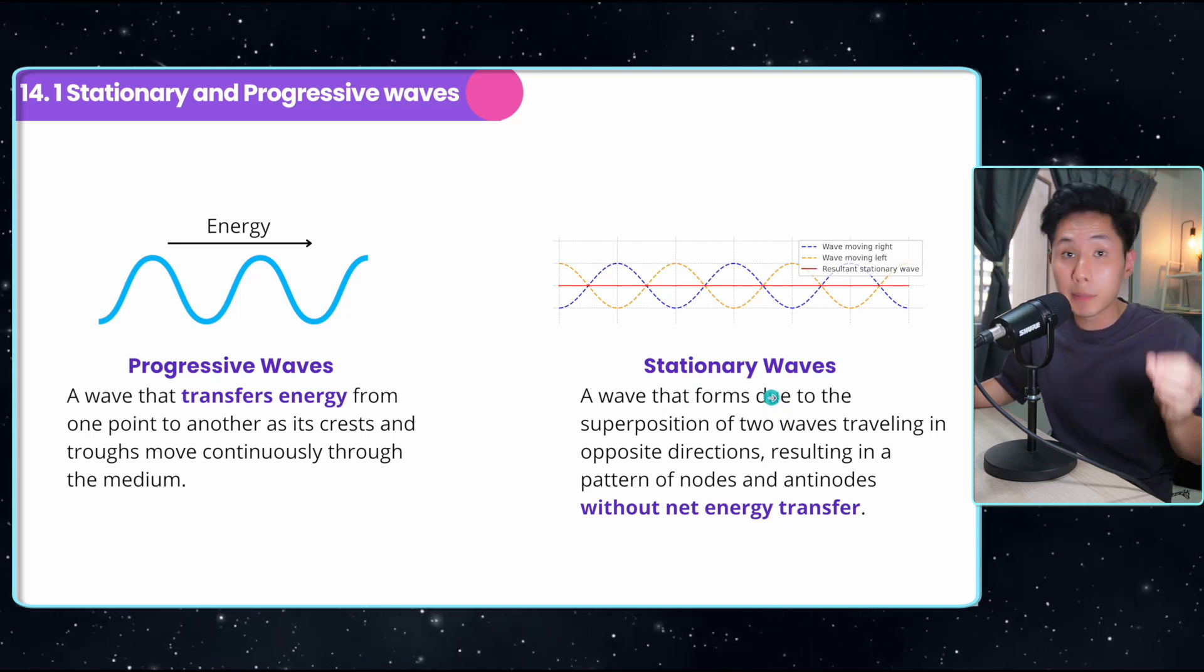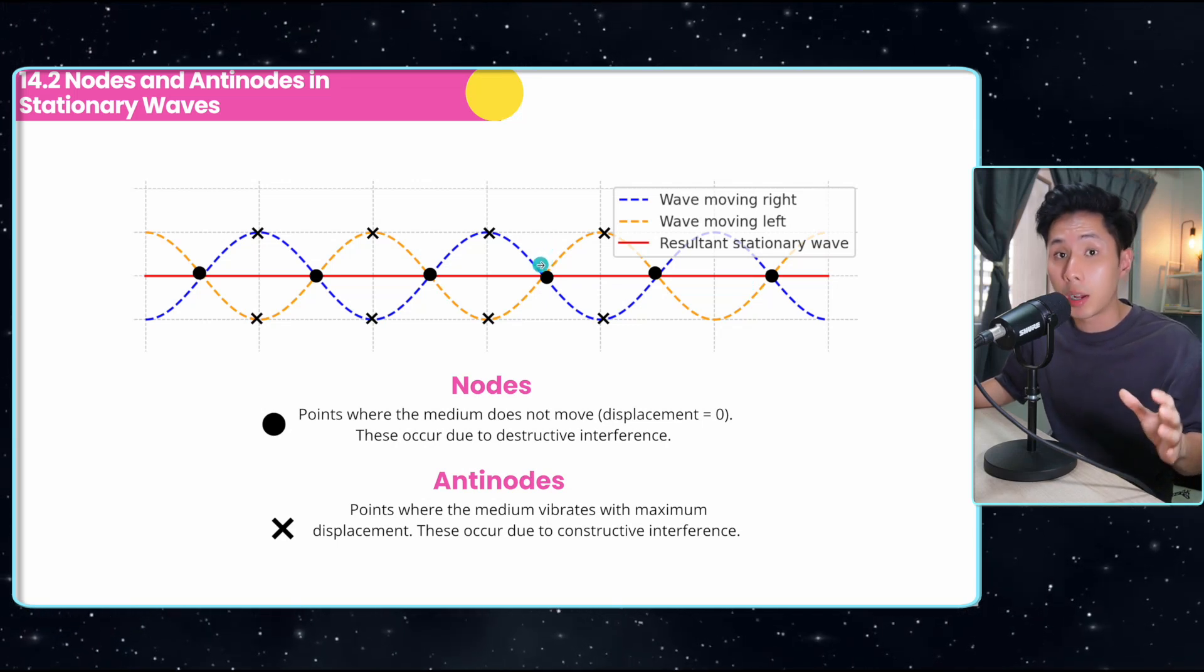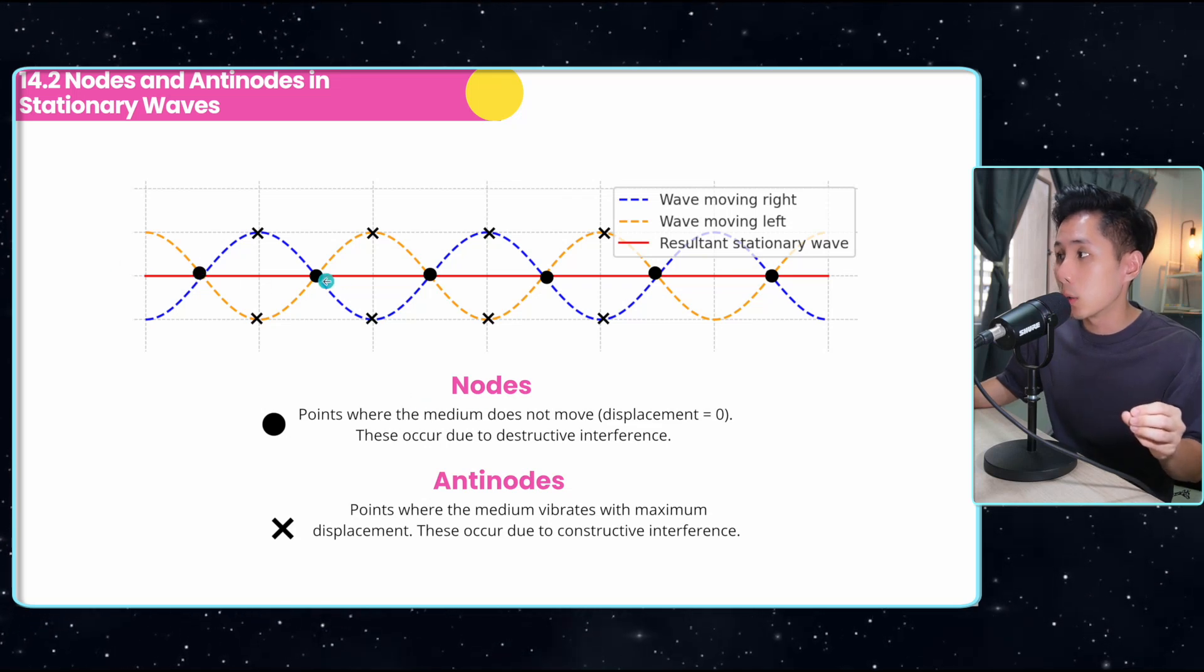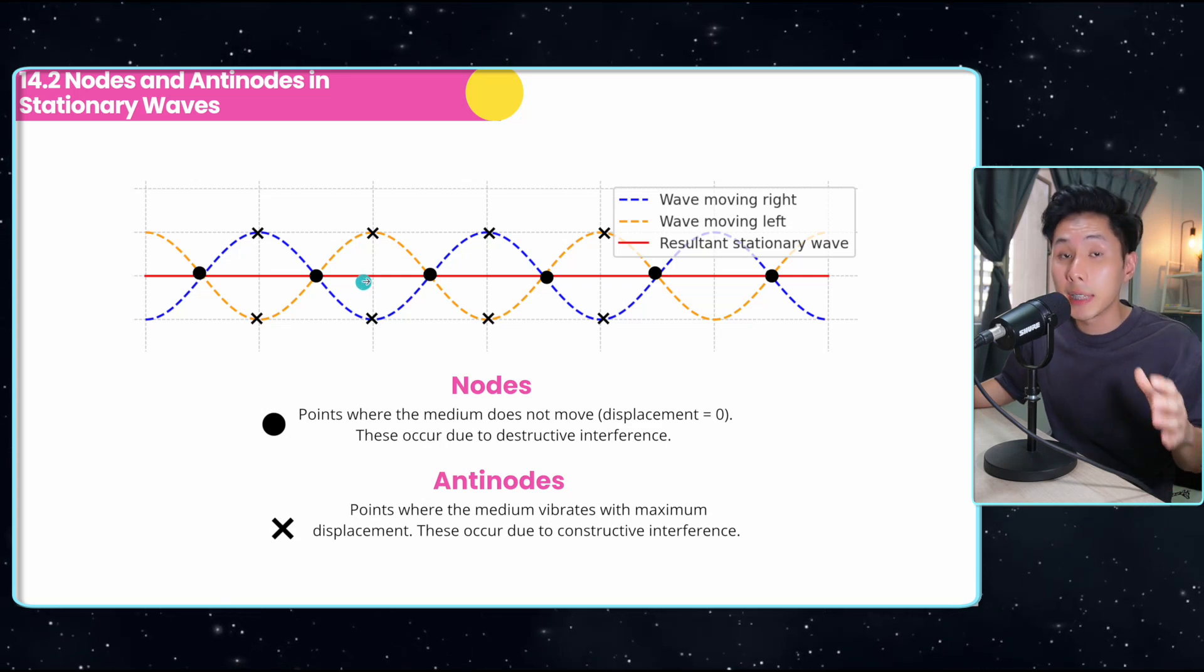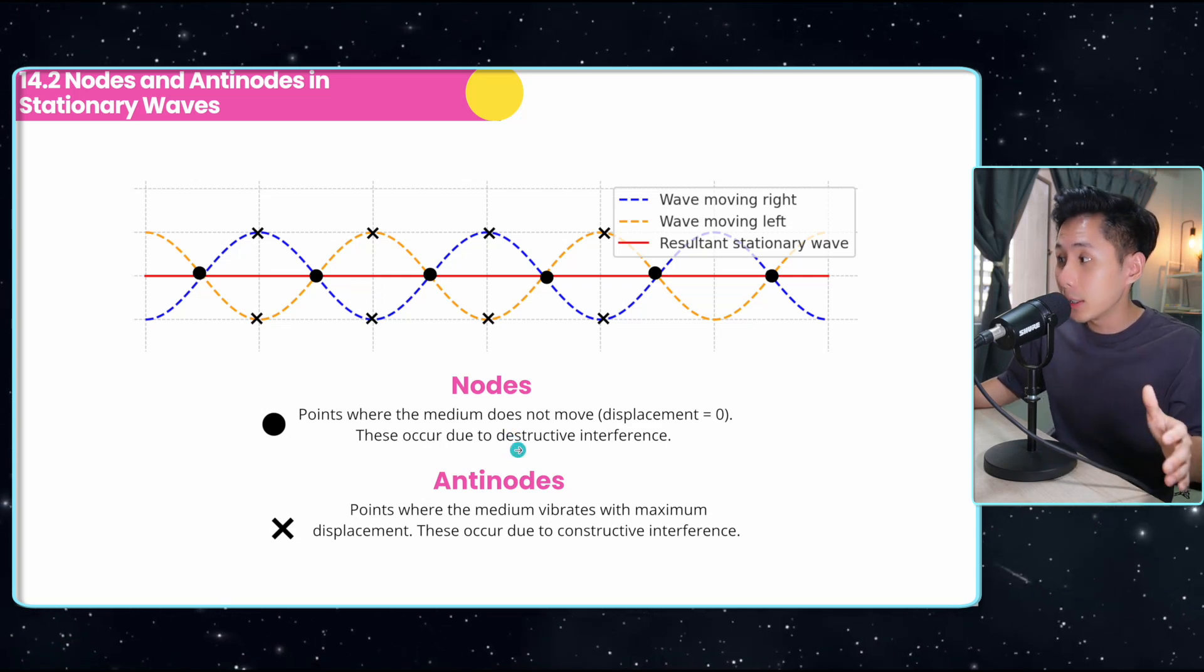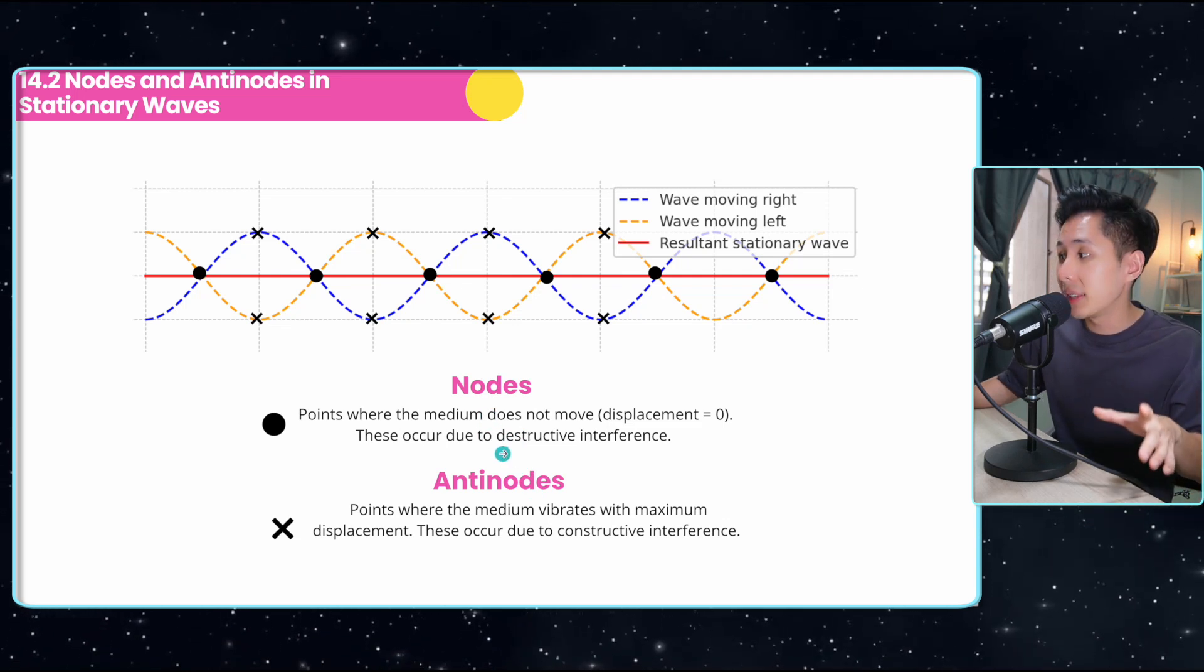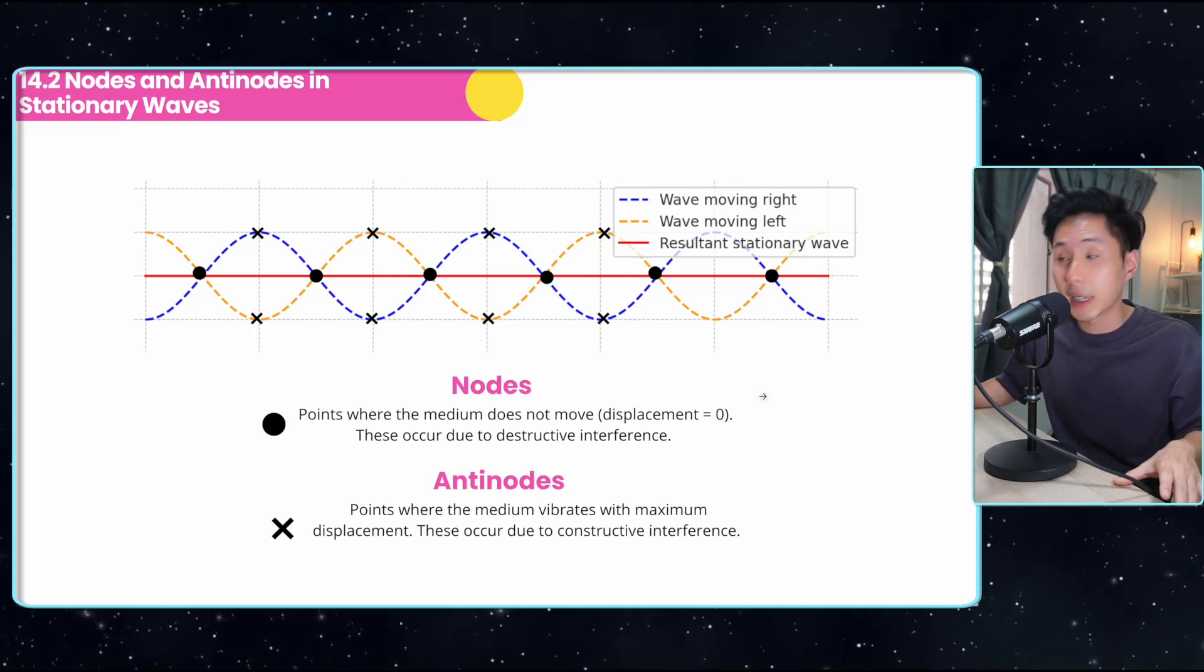So in this video, we're going to just focus on that. And when you're learning stationary wave, these are the few terms that you need to understand. First term is the term node. It is a point, which is the circle here, where the medium does not move. This is when destructive interference happens. Whereas the antinodes is where medium vibrate with the maximum displacement. And that's when constructive interference happens. So we're going to use these terms very often in this video.